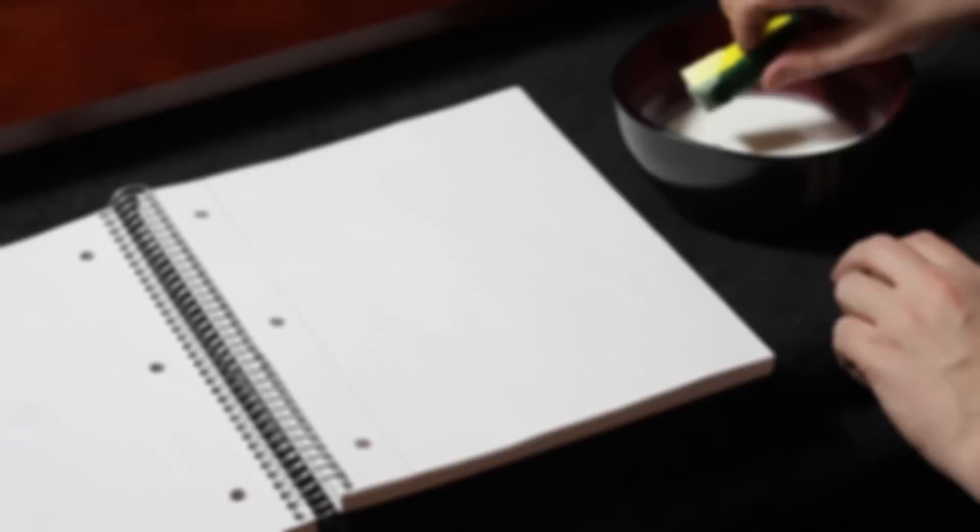Take about one-fourth of the notebook and open it up. Straighten up the other three-fourths because we're going to drop the glue bomb.